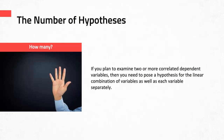Now that you understand how the number of independent variables affects the number of null hypotheses, let's turn our attention to the dependent variables. If you plan to examine two or more correlated dependent variables — and I want to emphasize correlated, not just two random dependent variables, but variables shown to have a significant correlation in the research — then you need to propose a hypothesis for the linear combination of those variables, as well as each of those dependent variables separately.